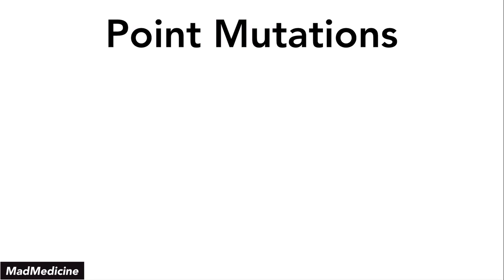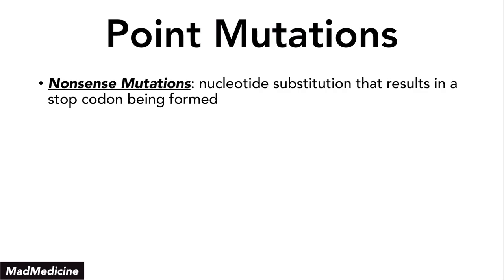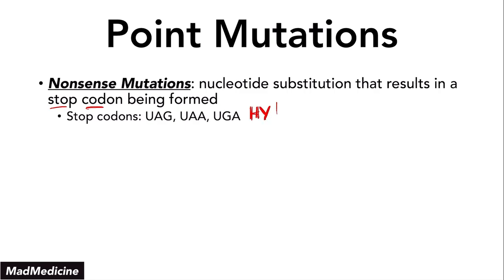The third point mutation you need to know is a nonsense mutation. A nonsense mutation occurs when you have a nucleotide substitution that causes a stop codon to be formed. As our body is producing proteins, the codons are being read, and at the very end you have stop codons. You need to know this — it is very high yield and you can easily be tested on this concept.